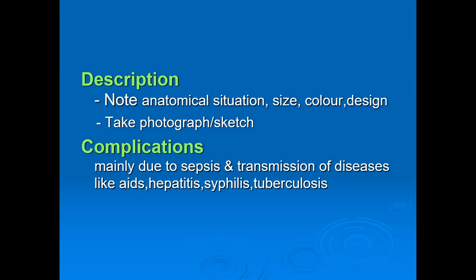On examination, how do we describe a tattoo mark? You will note the color, the size, the design — what does it show — and the anatomical situation, i.e., where it is located. Note whether it is close to an anatomical landmark, and mention the region of the body such as upper chest, lower chest, upper back, or lower back.